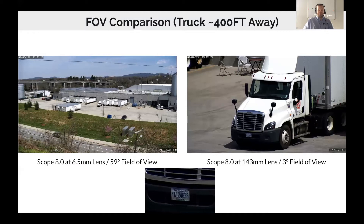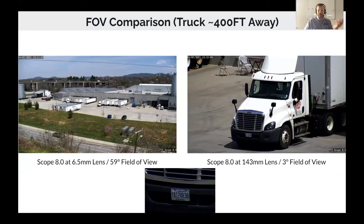Here's a field of view and lens comparison using our Scope 8.0, looking at a facility about 300 to 400 feet away across the street. At 59 degrees, it covers a lot of area. Then I zoomed in on a truck here — now it's a three-degree field of view and the entire image is just that tiny section. You can really see the difference in field of view between 59 and three degrees, and I've also created a 100% crop of the license plate so you can see the detail.